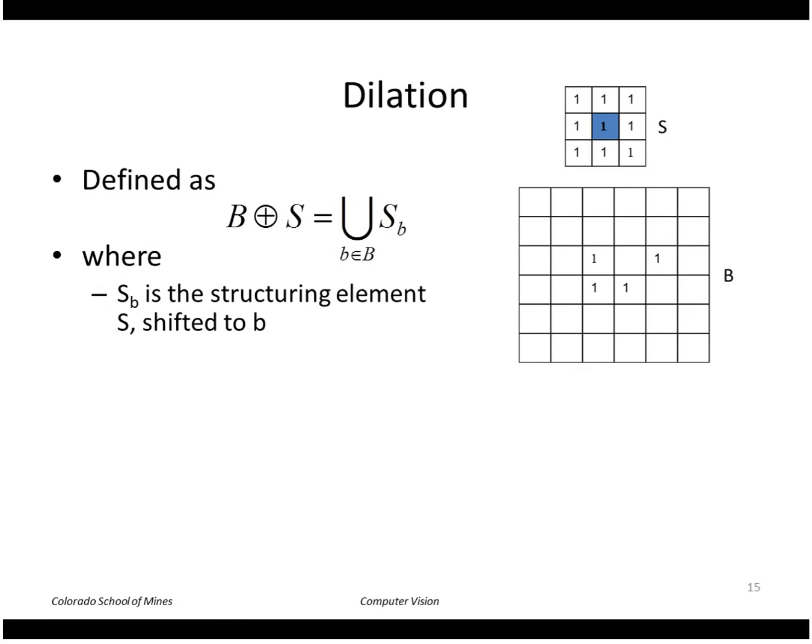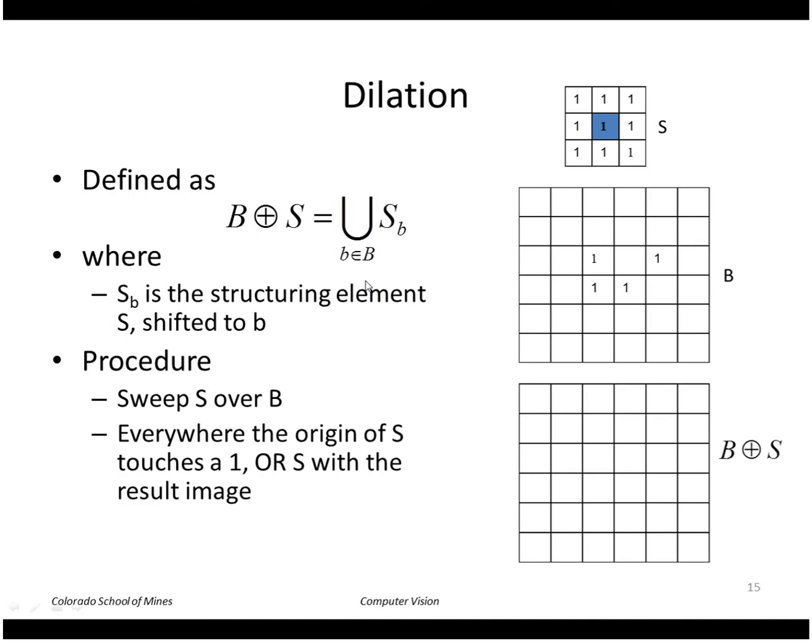So dilation is defined as the union of the structuring element shifted to points where there are ones inside B. So basically you shift the structuring element to the places where there are ones and where there are ones you OR it with the resulting image.